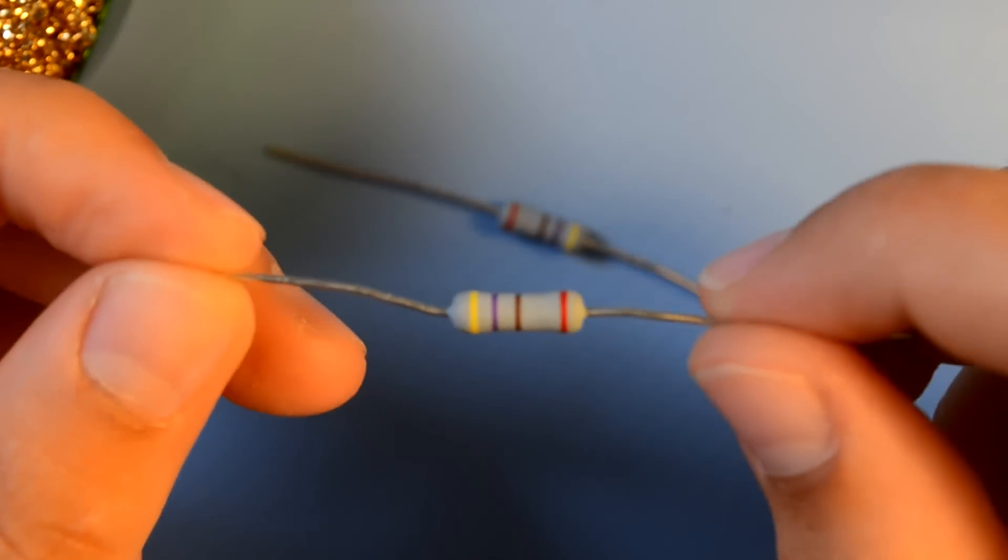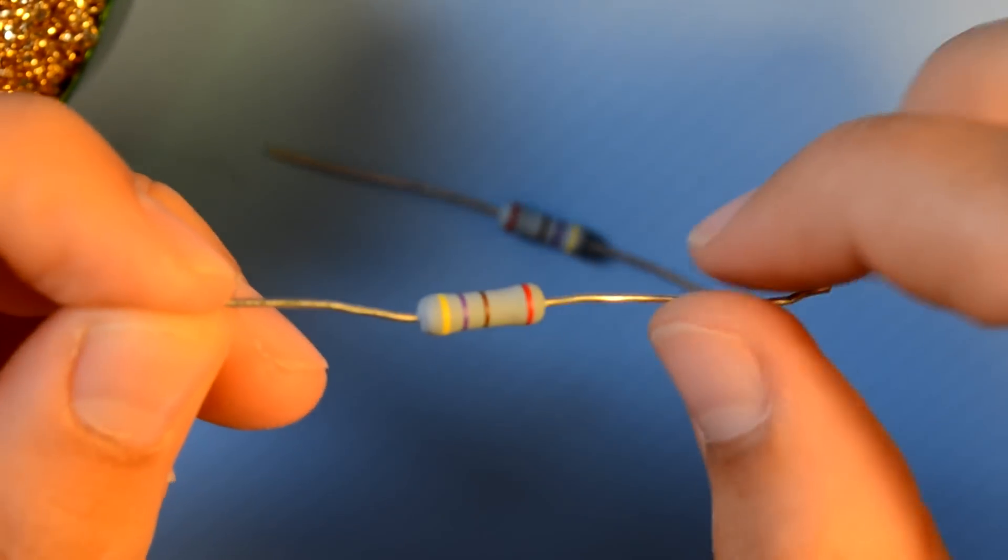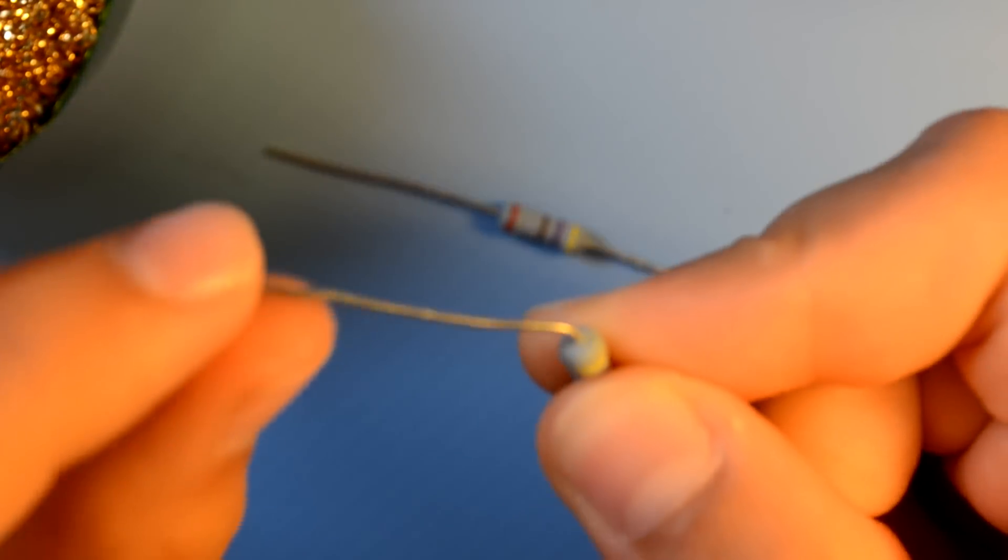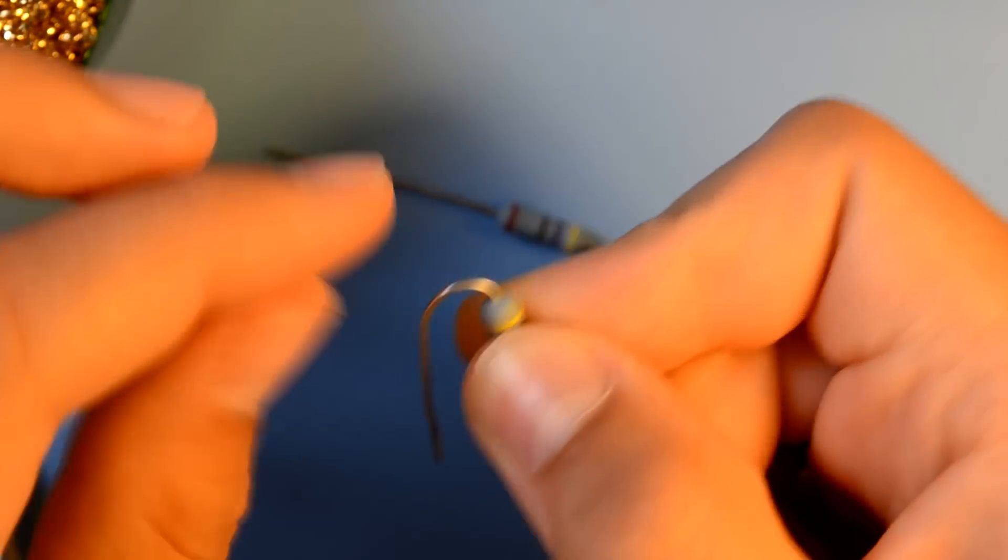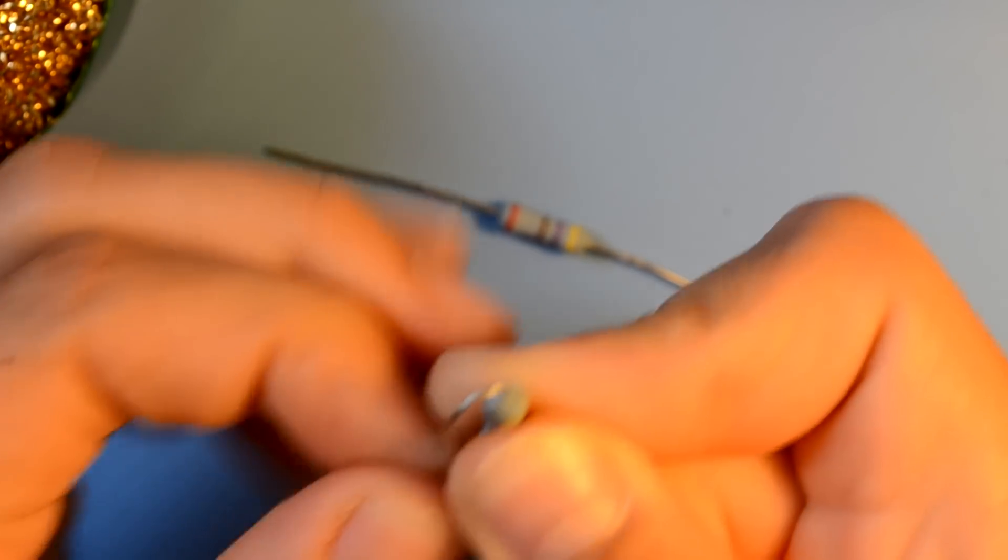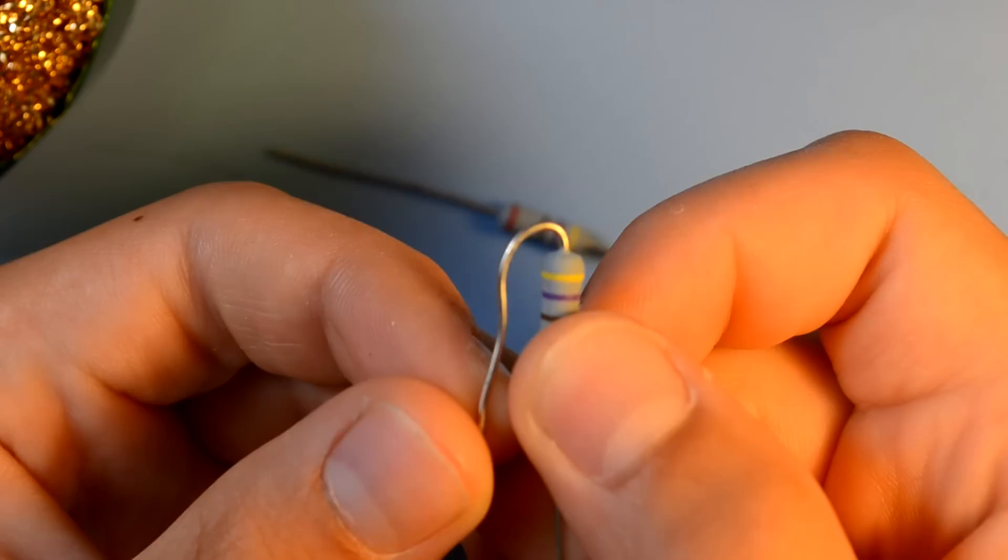For my 470 ohm resistors, they're quite large. So to save on space, I'm going to take one lead and fold it down and beside the resistor. This allows me to mount the resistor vertically and save some board space.